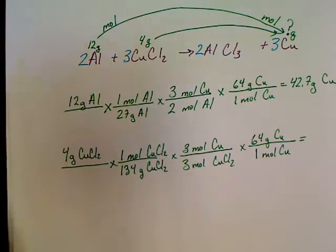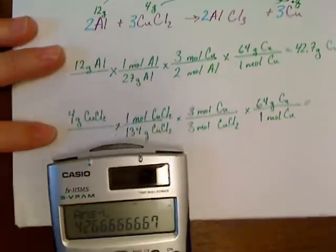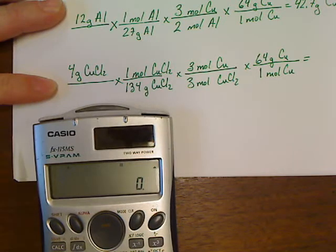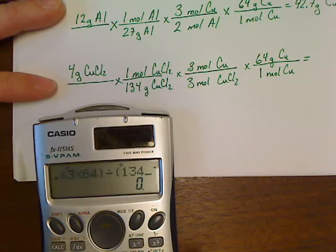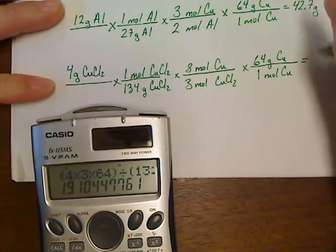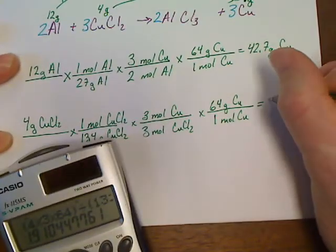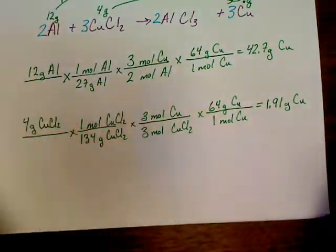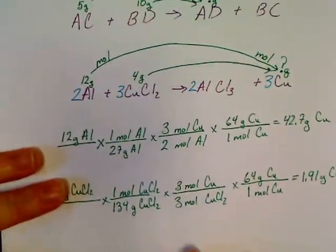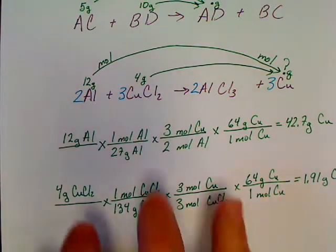And that's equal to, and we can put this in our calculator now. Let's see what we get on this one. 4 times 3. Well, that's big math. 64 divided by bottom, we've got 134 times 3, times 1, of course. 1.91 grams. All right. Now, here we've got two answers to this problem.